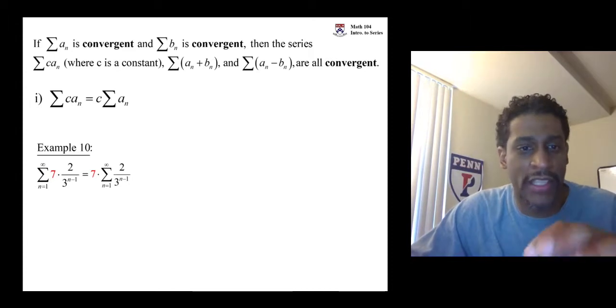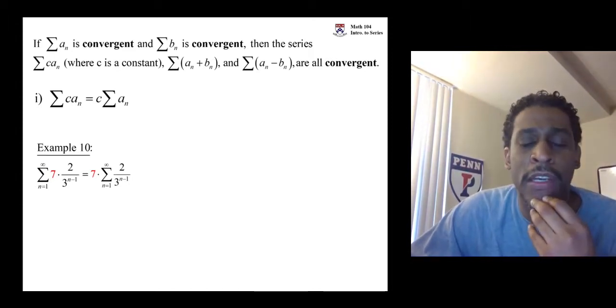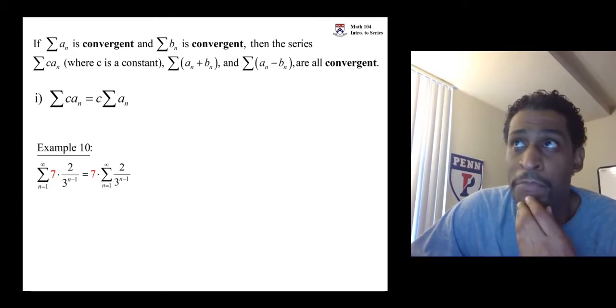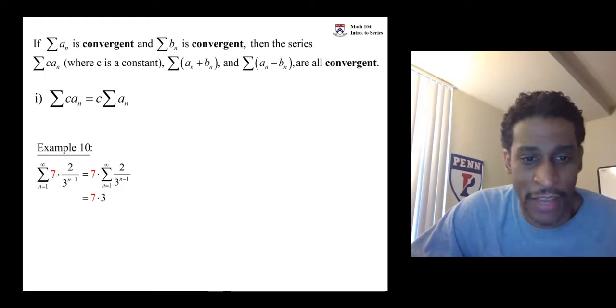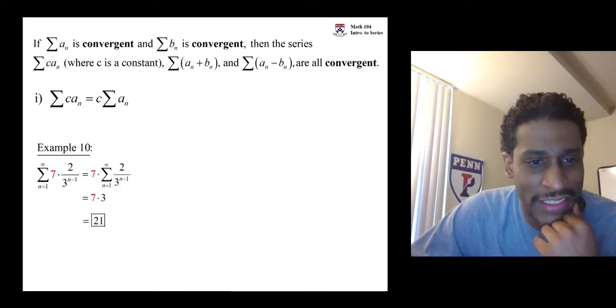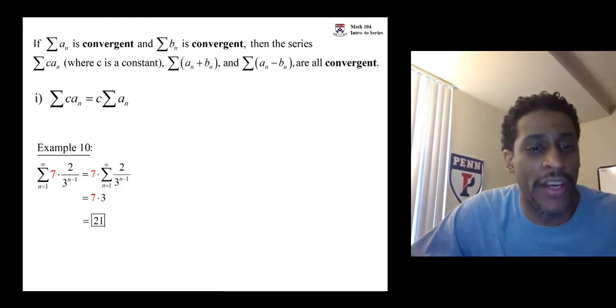The sum is what it was before. We did this in, I think it might have been called example one. It was our first example of a geometric series and the sum was three. So, this answer then is seven times three, 21. It'll be convergent and we know what it converges to.